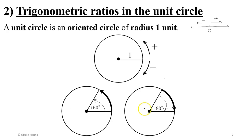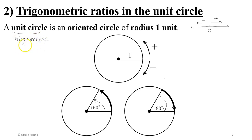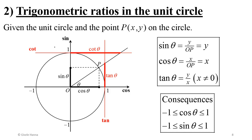So a unit circle is an oriented circle where all angles and arcs are oriented, and the radius is one unit. Some books call the unit circle a trigonometric circle, so whenever you encounter the term 'trigonometric circle' in any reference, it is in fact an oriented circle of radius one — the unit circle.